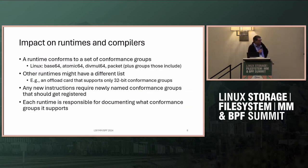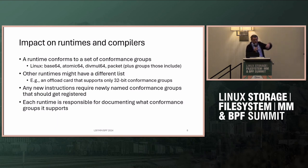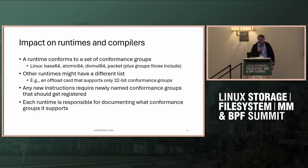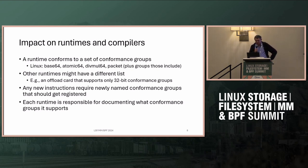What does this mean for runtimes and compilers? A runtime is responsible for stating what conformance groups it's compliant to. For Linux, that's basically all of them — the minimal expression is base64, atomic64, divmul64, and packet, because none of those inherently include the others. Things like base32 are implied by base64, so you don't have to list it. Other runtimes might have a different list. The reason for having specific conformance groups is because we know of runtimes that don't want the complete set — for example, only 32-bit operations, or no division on an offload card.